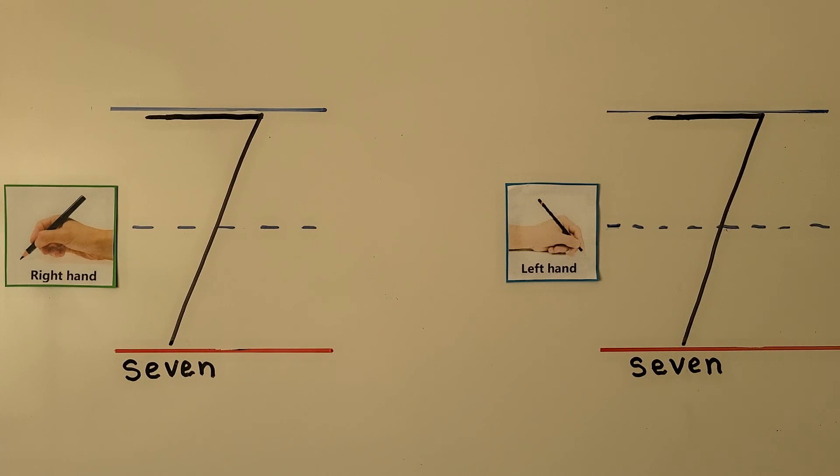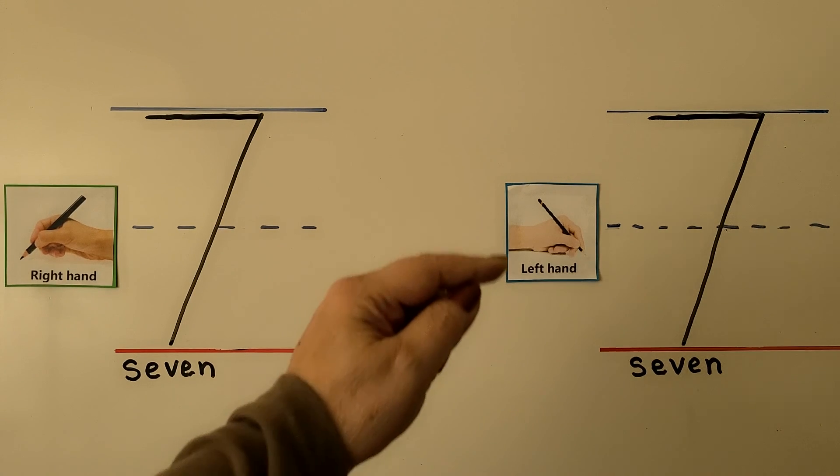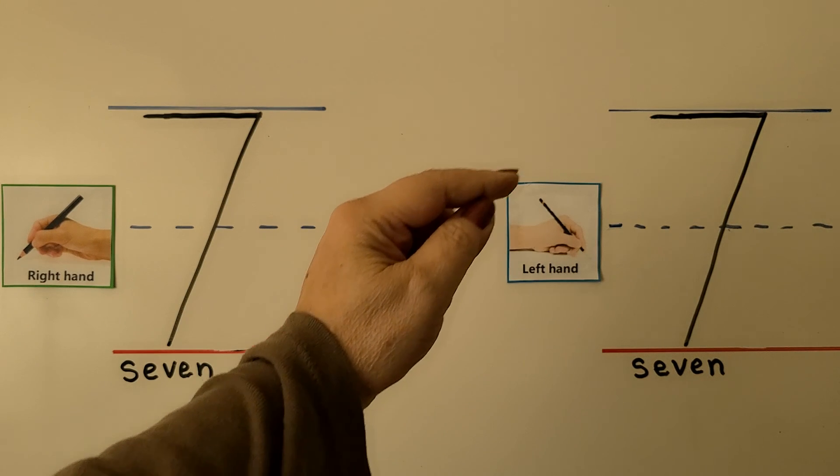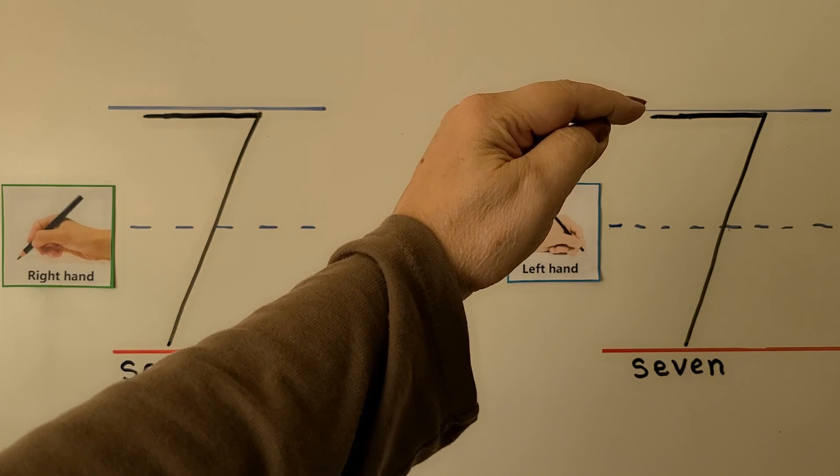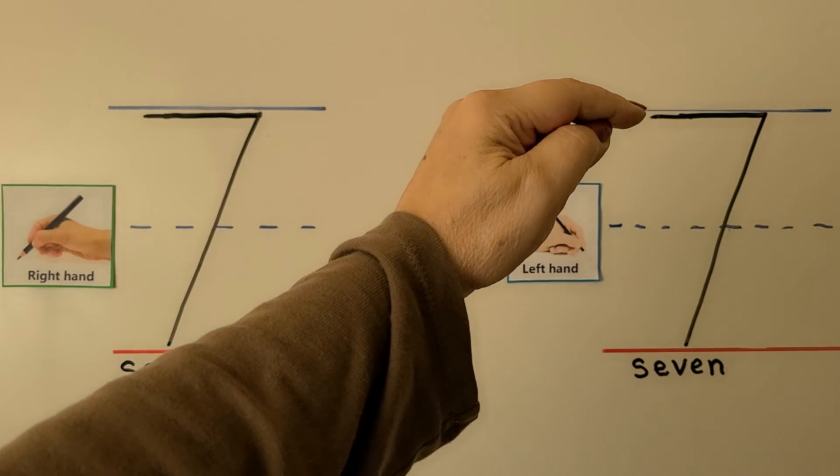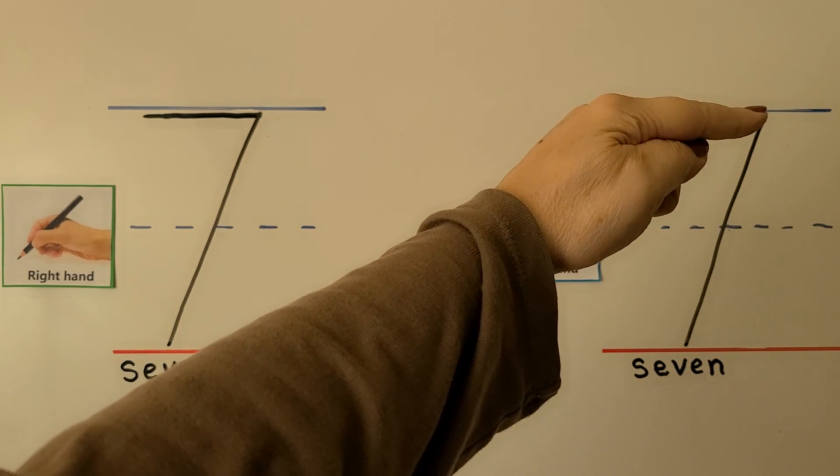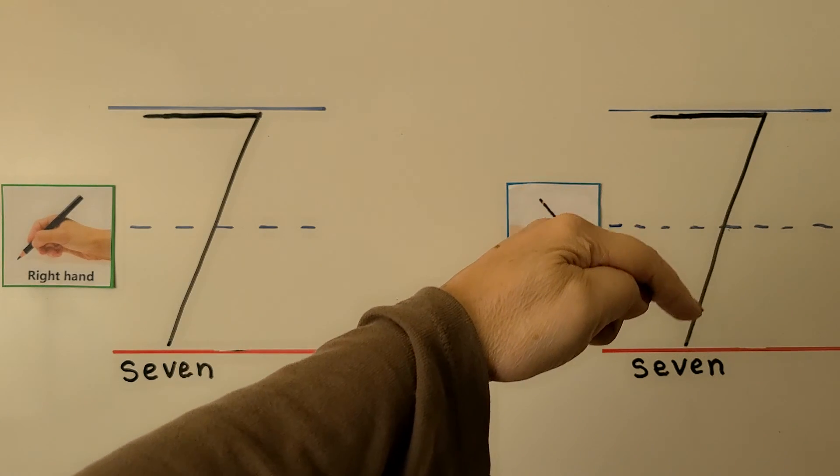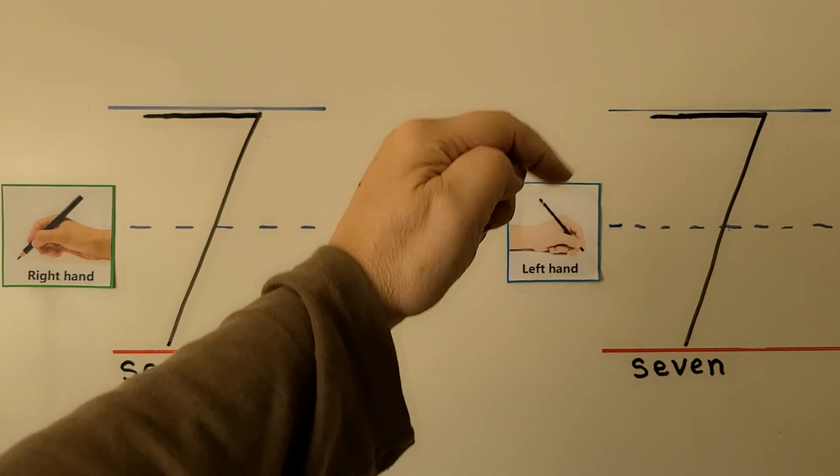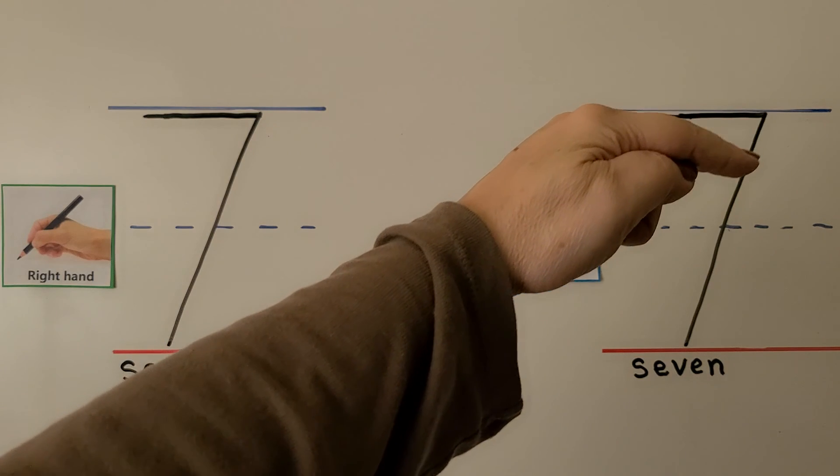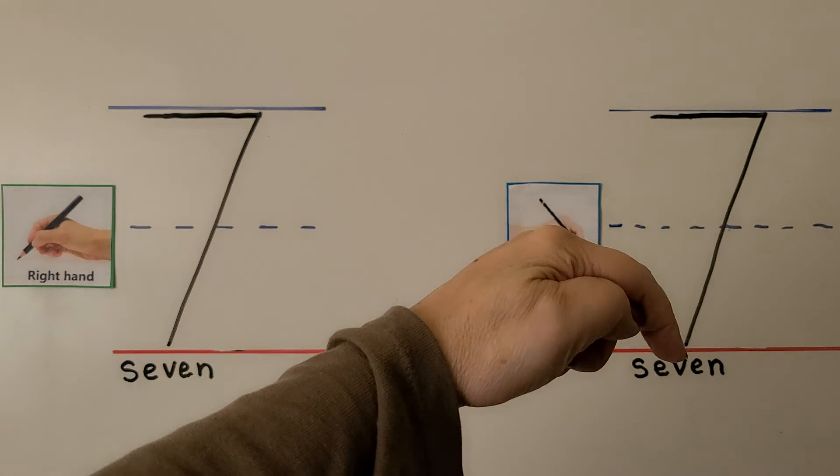We can try it left handed. We can make a 7 with our left hand by starting here like the right handed students and pushing away from our hand then coming towards our hand on a slant. Let's try that again. We push it away from our hand and come down towards our hand on a slant.